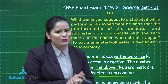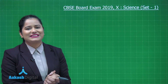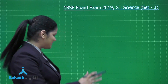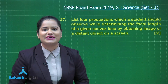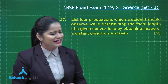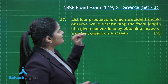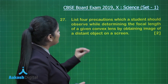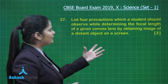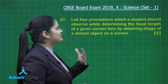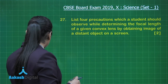Now let's move on to question number 27, the last question of this paper. This also belongs to Section E, based on practical skills, and also holds two marks. The question says: list four precautions which a student should observe while determining the focal length of a given convex lens by obtaining the image of a distant object on a screen.